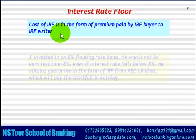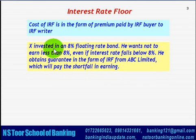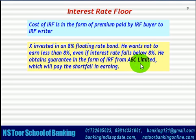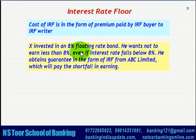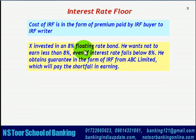For example, X invested in an 8% floating rate bond and wants not to earn less than 8% even if the interest rate falls below 8%. So he obtains a guarantee in the form of an IRF from ABC Limited, which will pay the shortfall in earning if any because of the rate of interest going below 8%. Here X is getting a guarantee from ABC Limited that his earning should not fall below 8%, and if tomorrow the interest rate falls below 8%, whatever the shortfall, that will be compensated by ABC Limited. That is how the IRF operates.